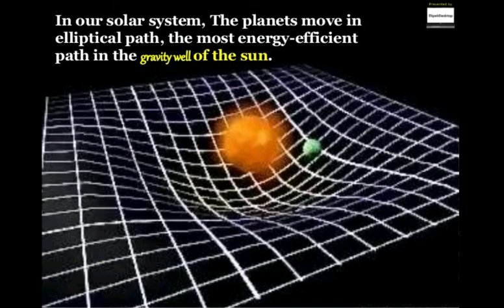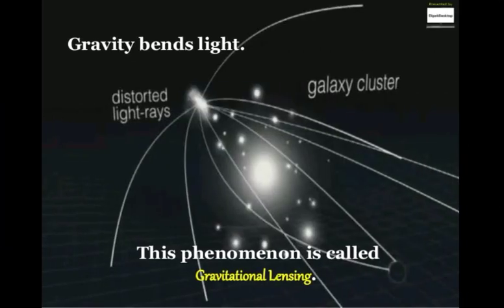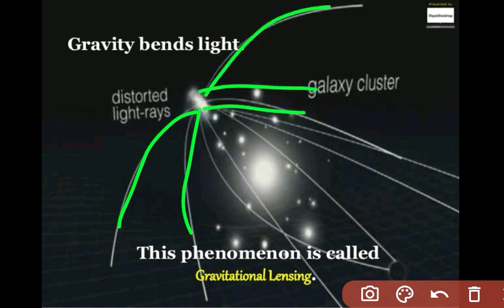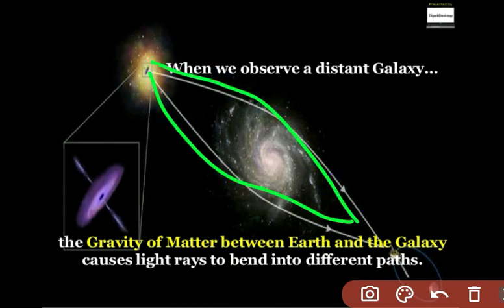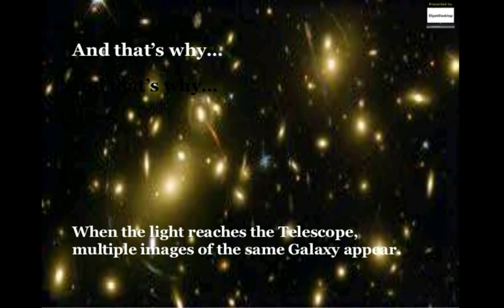Gravity can bend light, and this phenomenon is called gravitational lensing. When we observe a distant galaxy, the gravity of matter between Earth and the galaxy causes light rays to bend into different paths. When the light reaches the telescope, multiple images of the same galaxy appear.